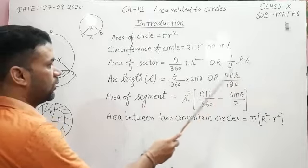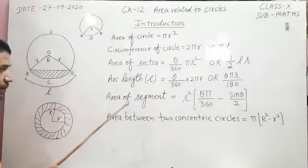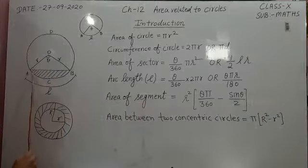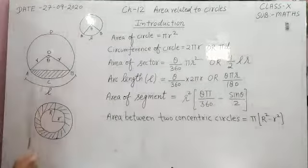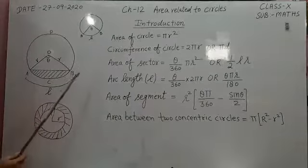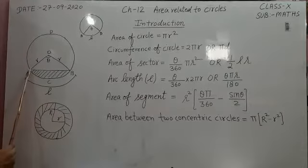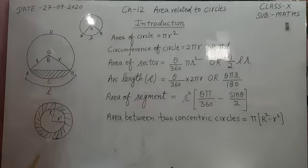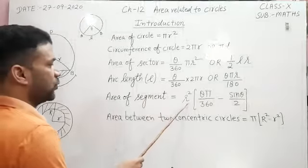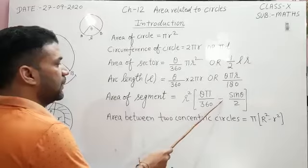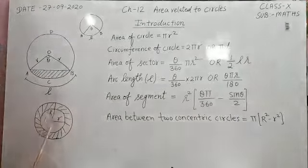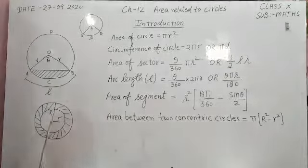And the area of segment - this shaded part is called segment. What is segment? The area enclosed between a chord and arc: r²[θπ/360 - sin(θ)/2]. And the area between two concentric circles...